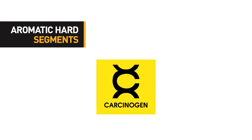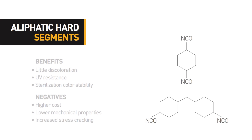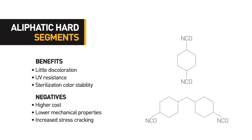The aliphatic diisocyanates show improved features for medical devices as they are more stable in light and do not break down to carcinogenic compounds. However, aliphatic diisocyanates are more expensive than the aromatic diisocyanates and they produce a polymer with lower mechanical properties. The loss of mechanical properties is slight and is most often accounted for in the device design. Additionally, the aliphatic urethanes are more prone to degradation by environmental stress cracking than the aromatic urethanes.